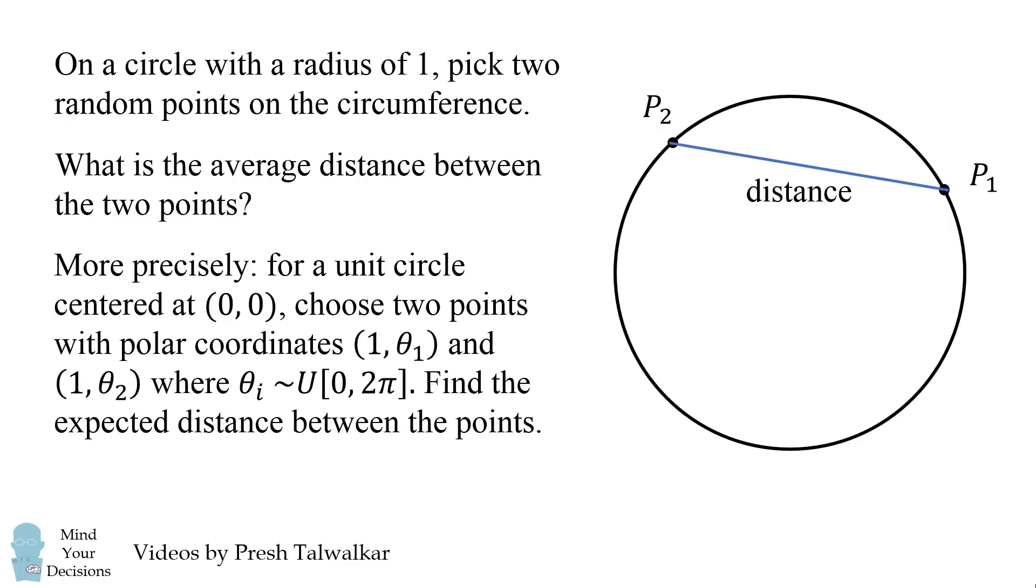To be precise, imagine a unit circle centered at 0, 0. Choose two points with polar coordinates 1, theta 1 and 1, theta 2. Where the angles theta sub i are distributed uniformly from 0 to 2 pi, find the expected distance between the points.